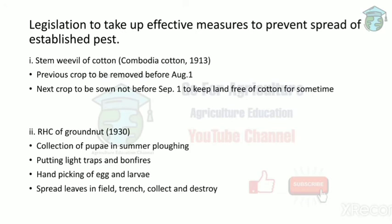Legislation also includes measures to prevent the spread of established pests. For stem weevil of cotton, farmers must follow rules: the previous crop should be removed before August 1st, because if it remains while the new crop is sown, the new crop may become infested. The next crop should not be sown before September 1st — keeping the land free of cotton ensures no host is available for the stem weevil, causing it to die.